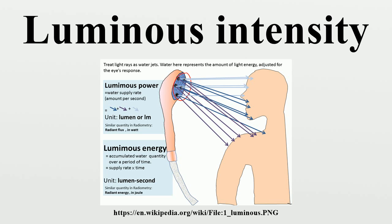Prior to the definition of the candela, a variety of units for luminous intensity were used in various countries. These were typically based on the brightness of the flame from a standard candle of defined composition, or the brightness of an incandescent filament of specific design. One of the best known of these standards was the English standard candle power — one candle power was the light produced by a pure spermaceti candle weighing one-sixth of a pound and burning at a rate of 120 grains per hour.